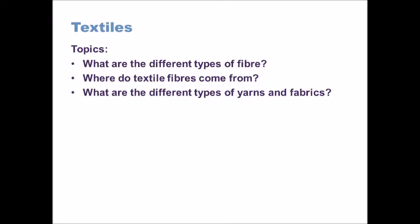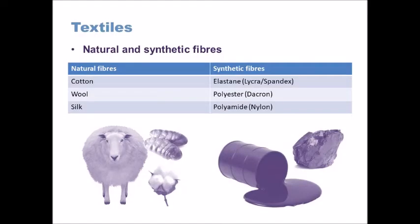So first of all, the main two areas that textiles are taken from are natural and synthetic sources. Now these can be broken down into a third area as well, which is regenerated fabrics, and I'll talk about that briefly in a little while. But effectively, natural fibres are anything that come from nature.